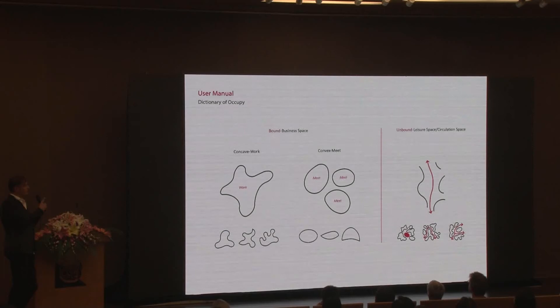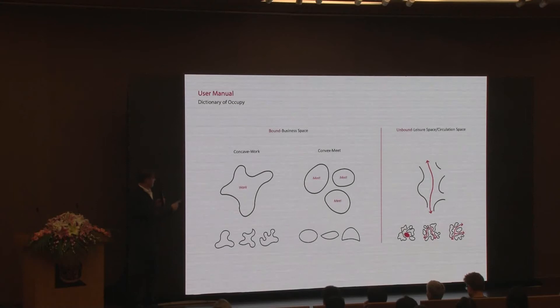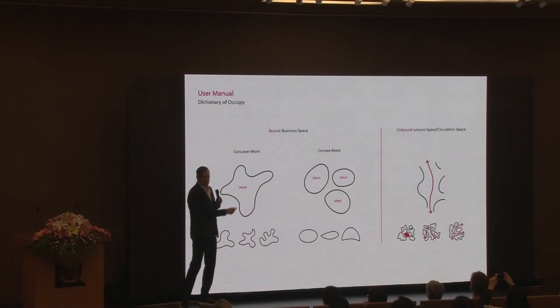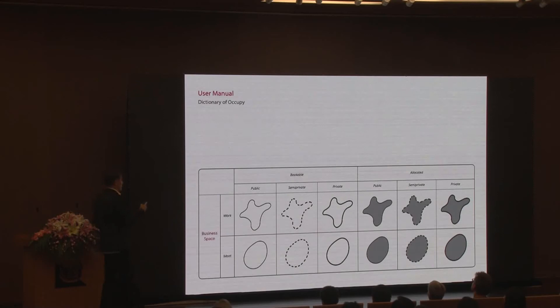I'm just showing a few sketches of something ongoing, trying to do this. You can see the different morphologies distinguishing leisure and circulation space from business space — unbound versus bound — and two types of business spaces: workspace and meeting spaces, convex versus concave. Each of them has a variety; these are not stereotypical, these are not traffic signs — each comes in a whole variety. And then you have types of boundary: booked versus allocated, public versus private. All these things mean something.